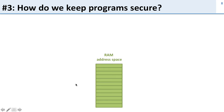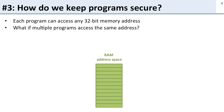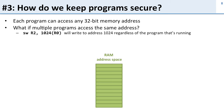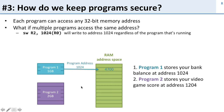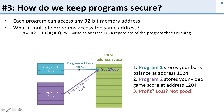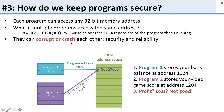Now let's look at another problem with memory: how do we keep programs secure? Each program can access any 32-bit address, so what if multiple programs access the same address? We have two programs both issuing this instruction: store word r2, 1024(r0) — writing to address 1024. Program one is storing my bank balance at address 1024. Now program two is going to store my video game score — also to address 1024. Both programs have written to address 1024 and overwritten each other. They're corrupting each other. Because we have no way to separate what memory they're accessing, they both legally access address 1024 and bump into each other. This is why programs and computers crashed a lot before virtual memory.